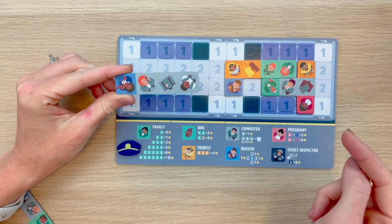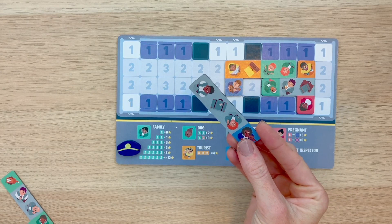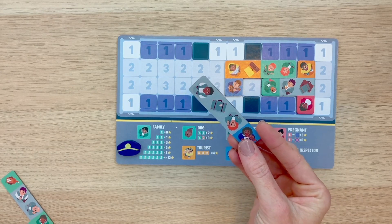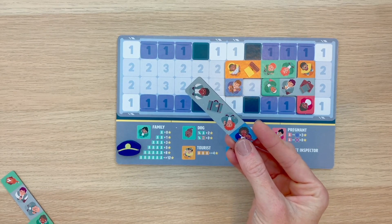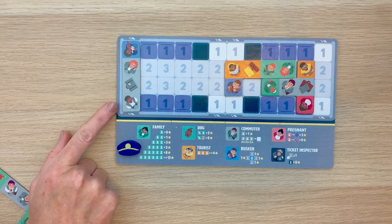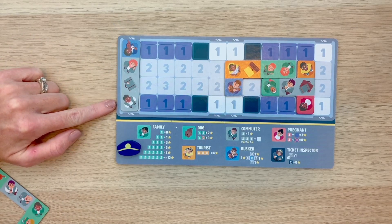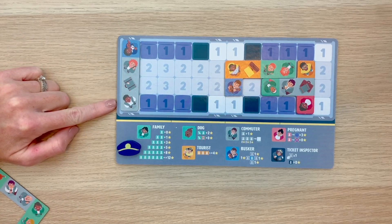Now let's take a look at the business commuter. Commuters are in a hurry and they like to make a quick exit out of the door. So if their group touches a door space, they're going to score more points. So in this example, they'll score one point. But if I'm able to have my group of commuters attached to a door space like this, then each passenger is now worth two points instead of one.